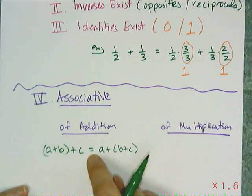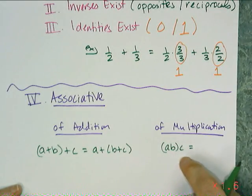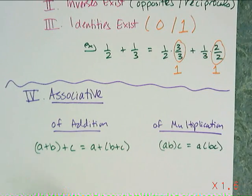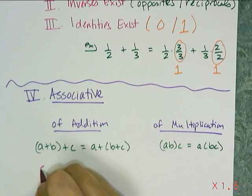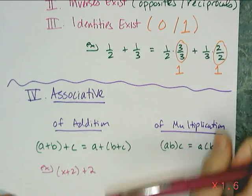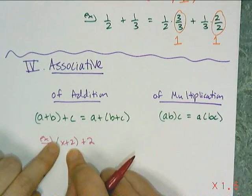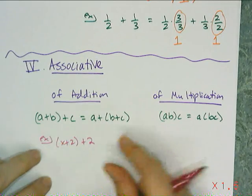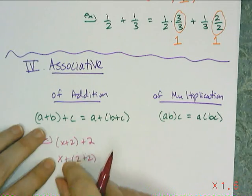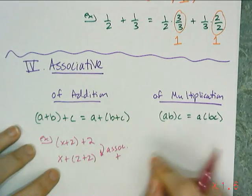The associative property applies to addition and multiplication only — not subtraction. It's got to be all addition or all multiplication. For example, if I have (x + 2) + 2, the x and the 2 are grouped together, but I want 2 and 2 grouped together instead. The associative property allows me to regroup them as x + (2 + 2), and then I can simplify.